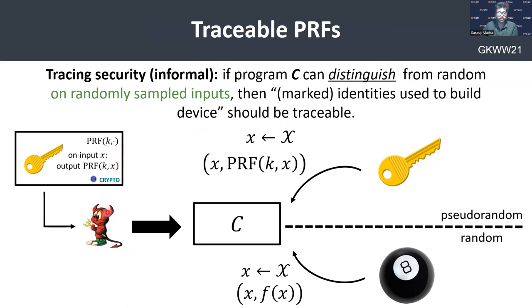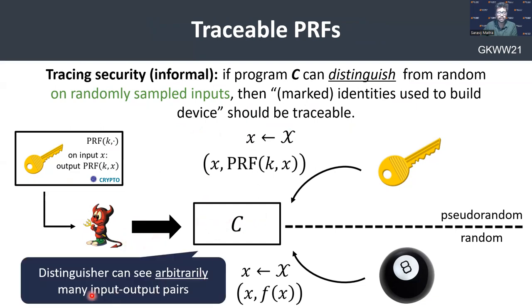More formally, here is the diagram. Suppose an adversary is given the marked version of a PRF; it then outputs a program C, which we call the distinguisher, and it can see arbitrarily many input-output pairs. We say that the distinguisher C is good if, given input-output behavior of a pseudorandom function and a random function, C should be able to tell these two distributions apart — that is, it should be able to break the security of the pseudorandom function.